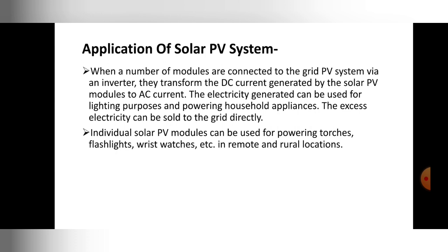First — applications of solar photovoltaic system. The first application: when a number of modules are connected to the grid PV system via an inverter, they transform the DC current generated by the solar PV modules to AC current. When modules are connected to the power grid, they generate DC current, and with the help of an inverter we convert that into AC current.